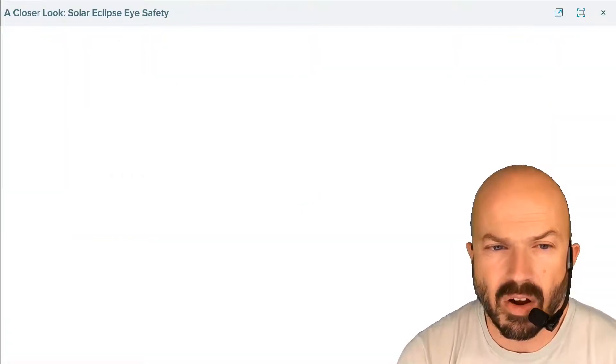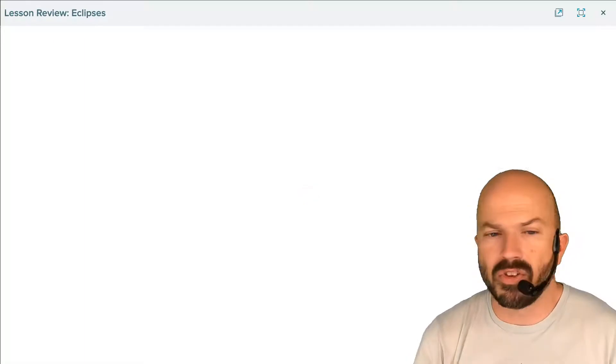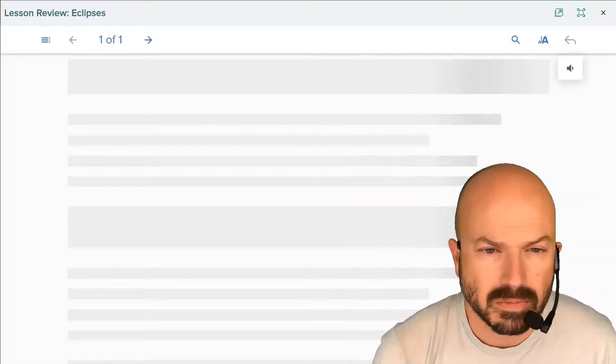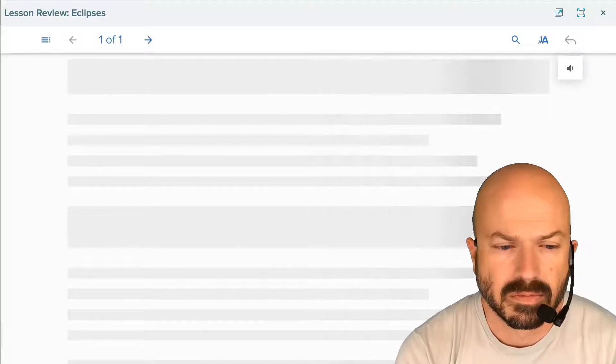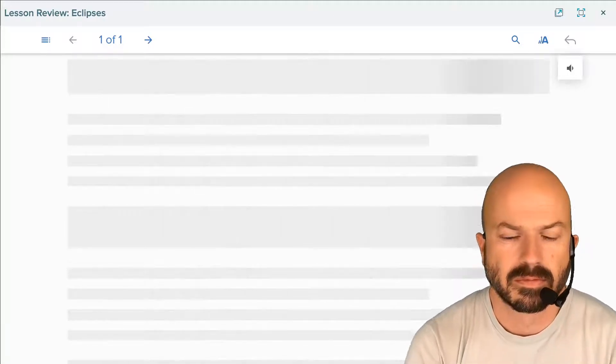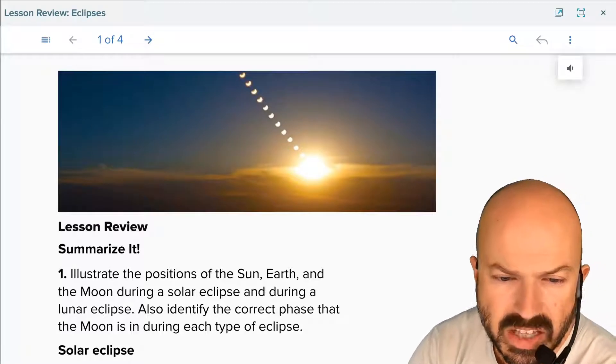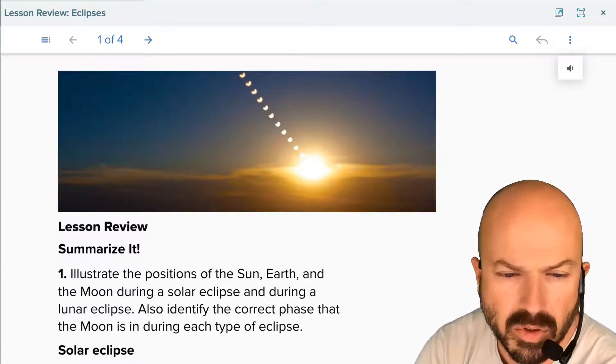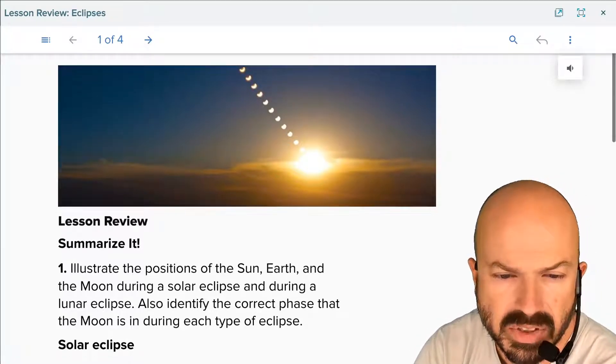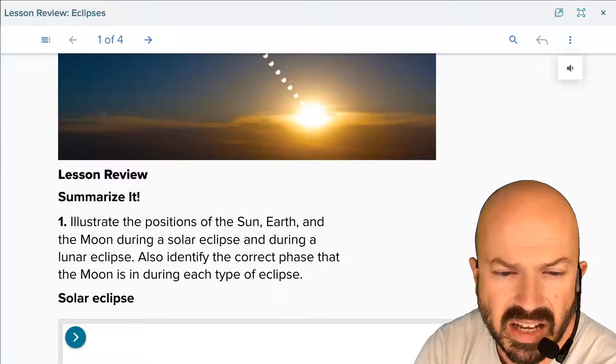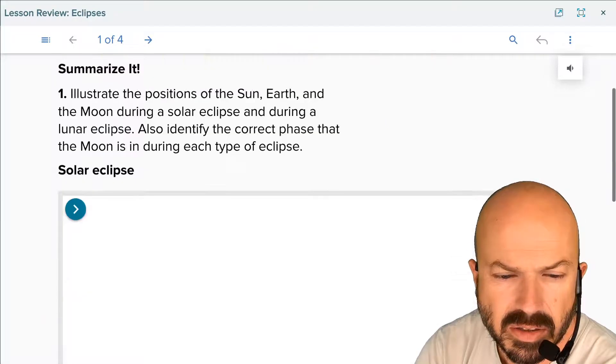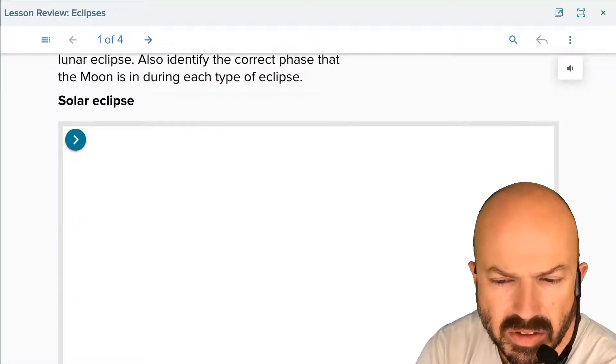We are on to our lesson review. Can you illustrate the position of the sun, earth, and moon during a solar eclipse and during a lunar eclipse? Also identify the correct phase that the moon is in during each eclipse. Pause when you're done, click play, let's go on to the next review question.